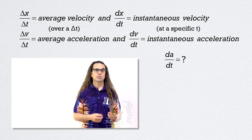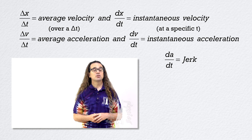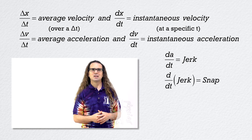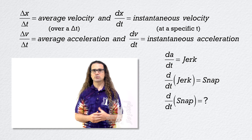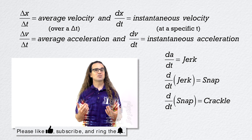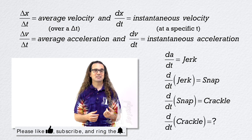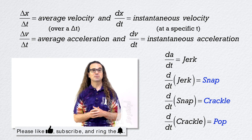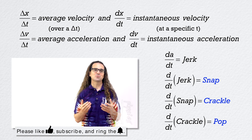Just so you know, the derivative of acceleration with respect to time is called the jerk. The derivative of the jerk with respect to time is called the snap. The derivative of the snap with respect to time is called the crackle. Anybody want to guess what the derivative of the crackle with respect to time is called? The pop! Snap, crackle, and pop. Thank you very much for learning with me today. I enjoyed learning with you.